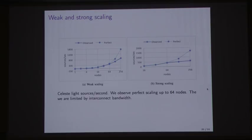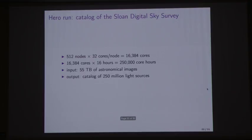Another aspect of the HPC paper is having a hero run where you use as many cores as you can. We used 512 nodes each with 32 cores, so 16,000 cores in total. We really did want to process the whole SDSS dataset, which is 55 terabytes. We ran it for 16 hours for a quarter million core hours. The input was this 55 terabyte collection, and the output was a catalog of 250 million light sources. It was exciting to get the hero run done, because we've been programming on it for several years before getting this catalog.